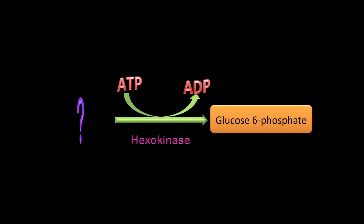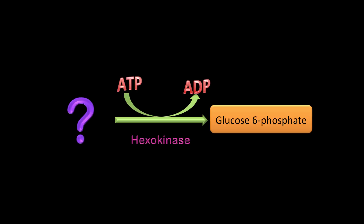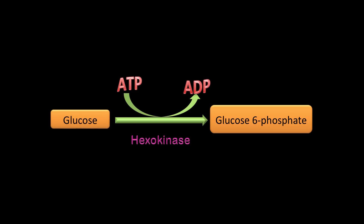The first reaction: you have a substrate going to glucose-6-phosphate. What is this substrate? This is supposed to be a reflex action. The enzyme is hexokinase, so the substrate is glucose.